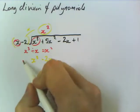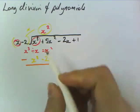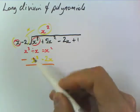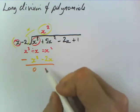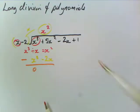Next step is we do a subtraction. x cubed minus x cubed is 0. 5x squared minus negative 2x squared. I forgot the squared on that.